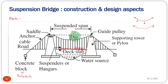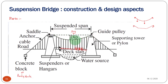Whatever the loading — whether it is a point load, a moving load, or a UDL — we have to maintain the parabolic profile of the cable. Since the cable is already flexible, we have to stiffen it by using stiffening girders or additional beams at the deck level.